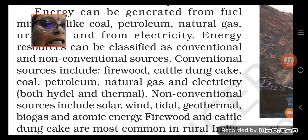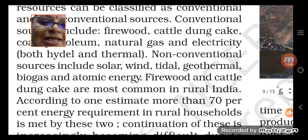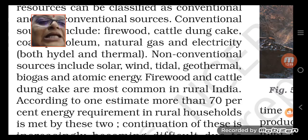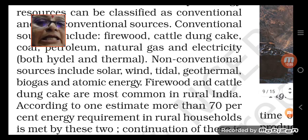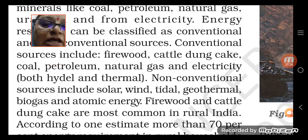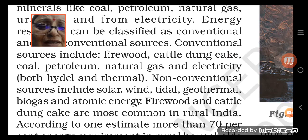In conventional sources we have: firewood, cattle dung cake, coal, petroleum, natural gas, and electricity — everything comes under conventional. In non-conventional sources we have: solar, wind, tidal, geothermal, biogas, and atomic energy.